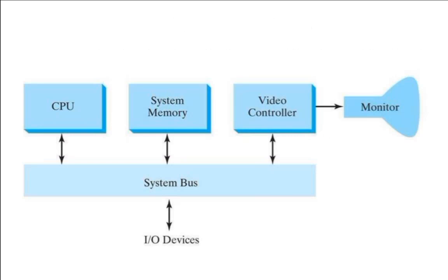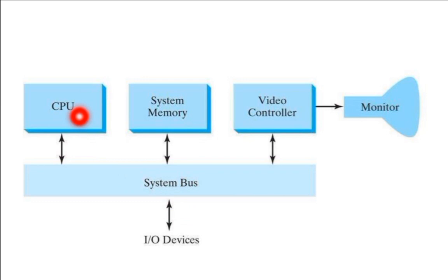In ordinary computers, this video controller or display controller is not used. But mainly when you are using your computer to draw graphical images, you use this extra special-purpose processor — the video controller. The I/O devices such as keyboard and mouse provide input, which is passed to the CPU, processed, and displayed on the monitor. The extra component here is the video controller.